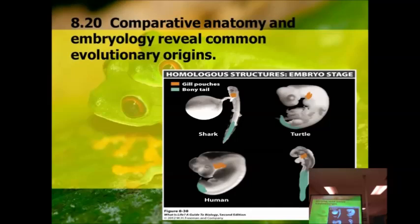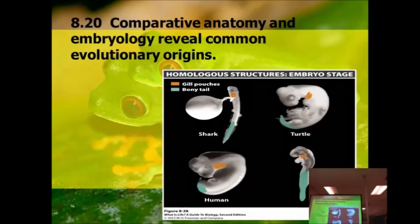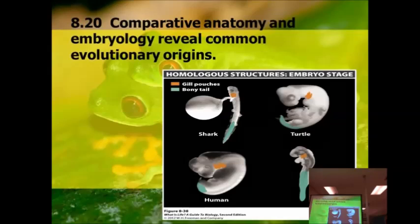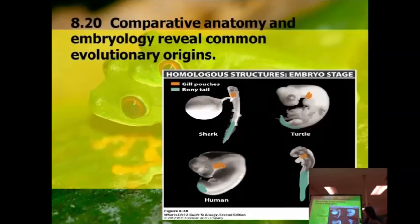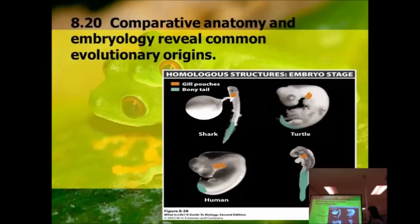One of the other ways that we look at evolutionary similarities between organisms is in embryology. We're talking about embryos — what's found inside of the eggs. If you look at a shark, a shark has a bony tail and it's got gill pouches when it's inside the egg. We've got a turtle who's got the bony tail and gill pouches, even though it will eventually develop lungs and doesn't even have gills.